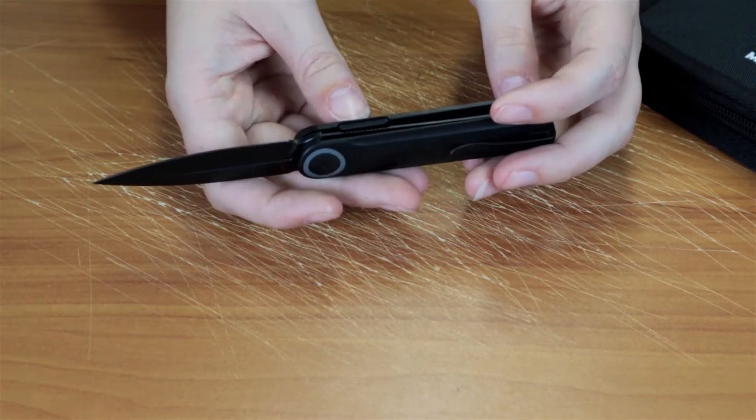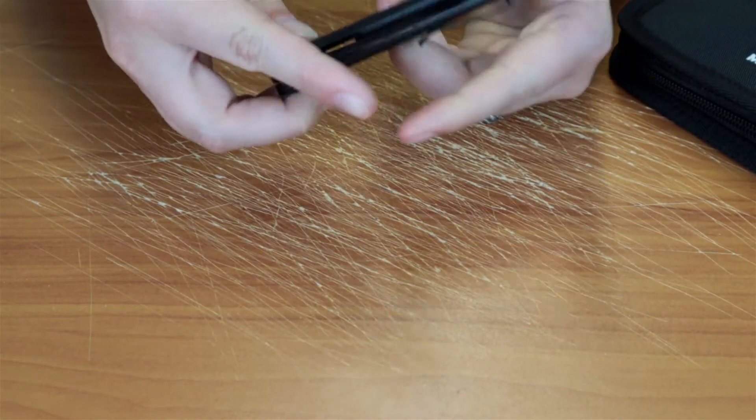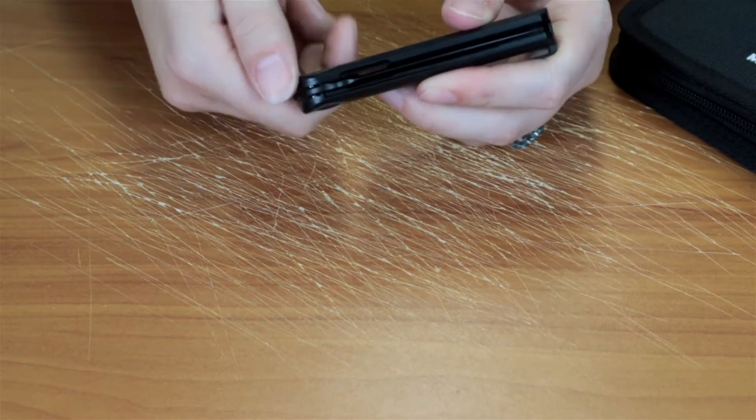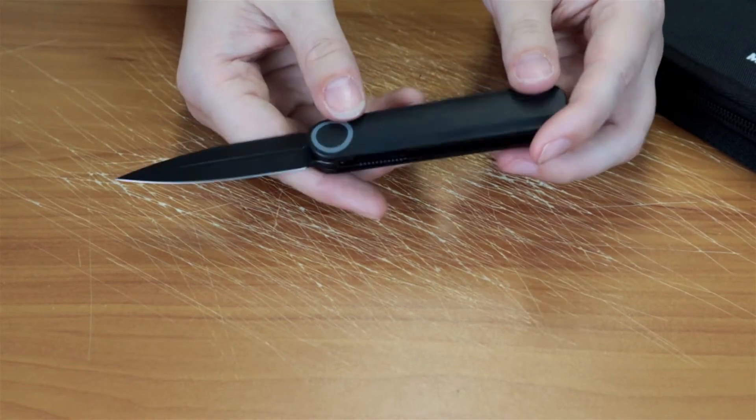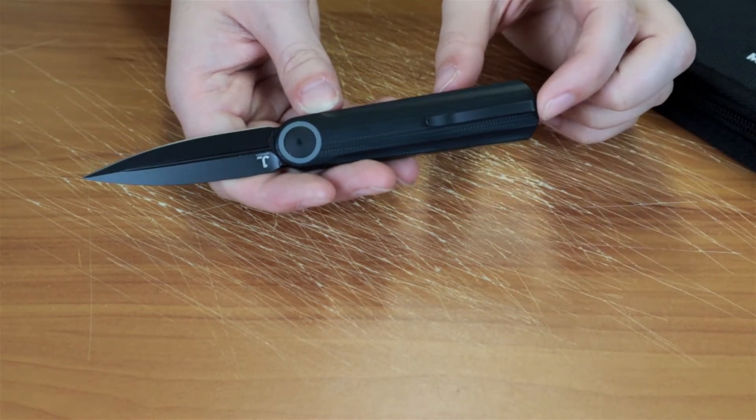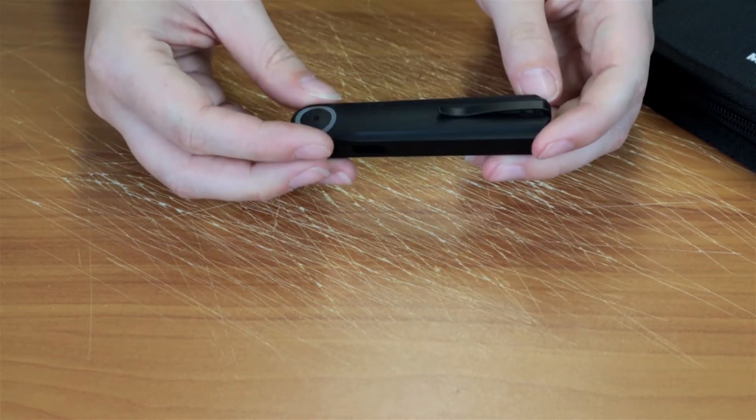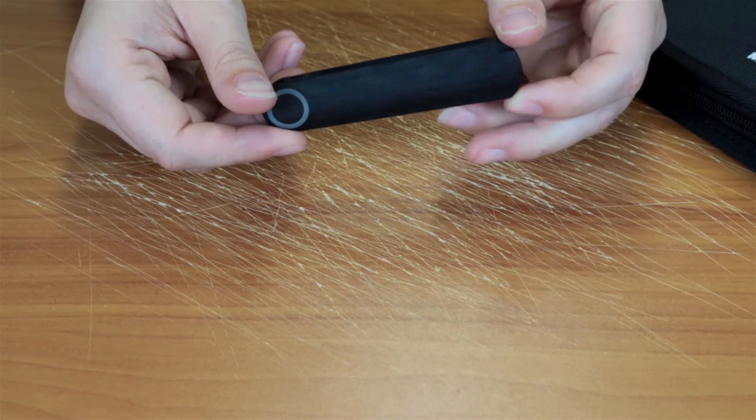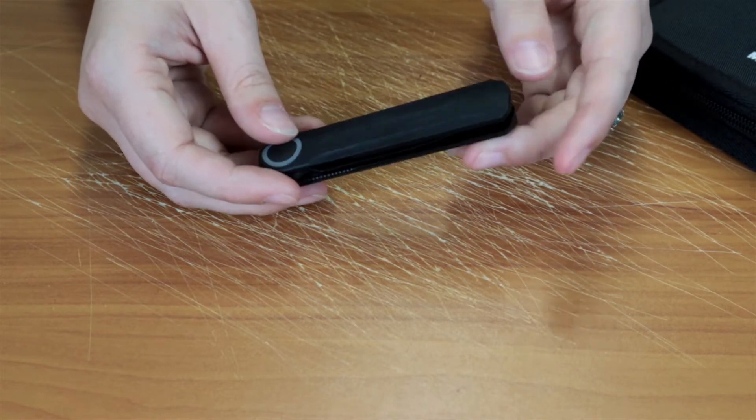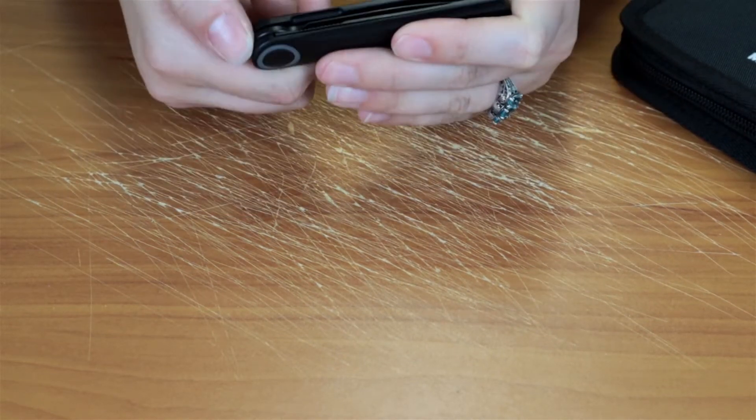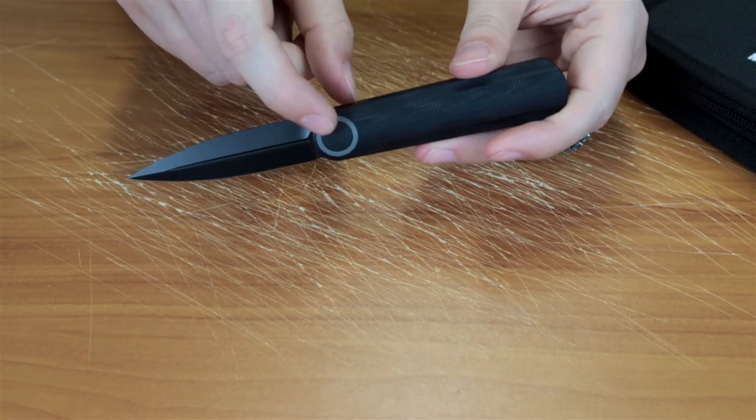This one does have stainless steel liners. They match the finish on this version—it's black stainless stonewash. There's a right tip-up pocket clip, same finish as everything else. No lanyard hole on this one, but I do like the little pivot cap accent that they put here. It's gray on this one.